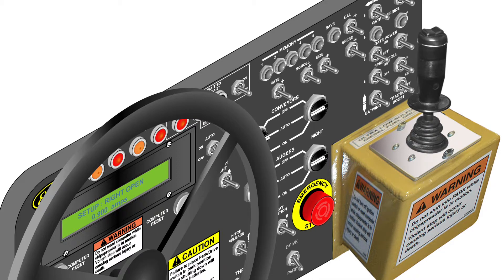Push the scroll switch down to move to the next screen. This screen is used to adjust the threshold current to the right gate closed solenoid. Use the cal switch to adjust the current up or down to increase or decrease the speed at which the right gate closes. Adjusting this value too high will cause the gates to hunt around the desired gate opening. Adjusting this value too low will cause a delay of the gate closing. Push the scroll switch down to move to the next screen.